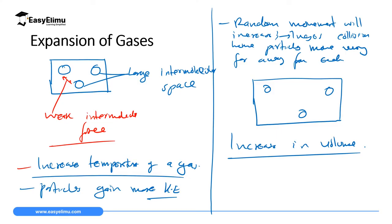The reason why gases expand more than liquids and solids is because the intermolecular force — the force which brings the particles close — is very weak compared to in liquids and in solids. When you increase the temperature, the particles gain more kinetic energy, the random movement or Brownian motion increases, the particles collide more, they move very far away from each other, and the intermolecular distance becomes very large — therefore they occupy more volume.